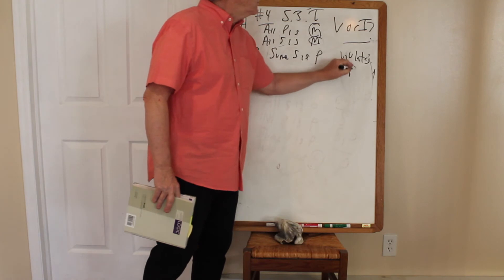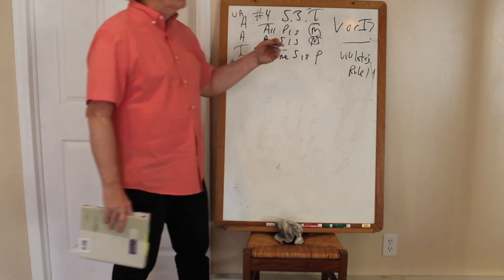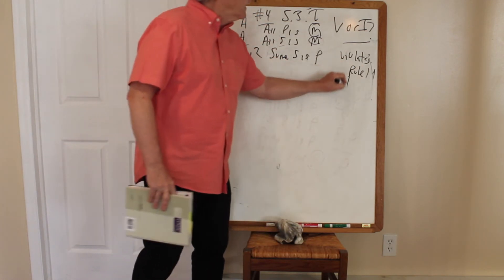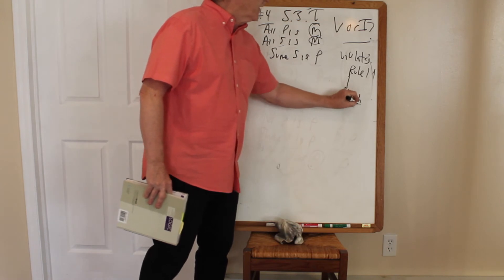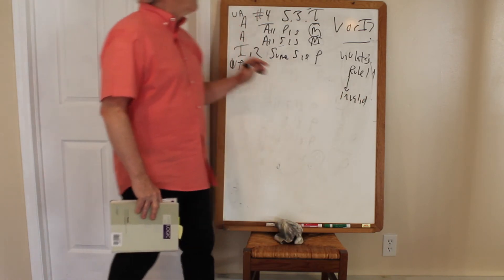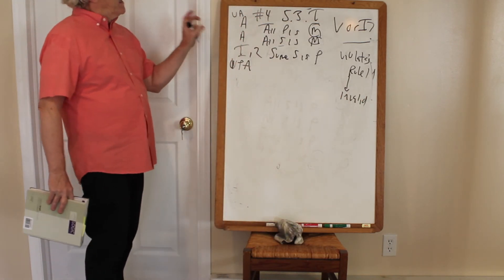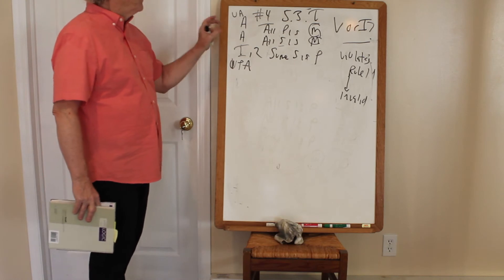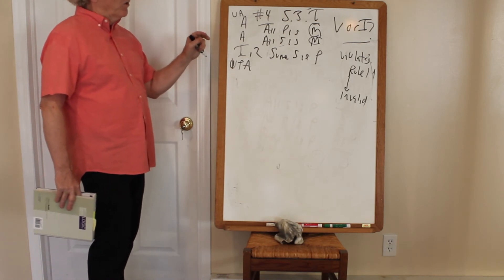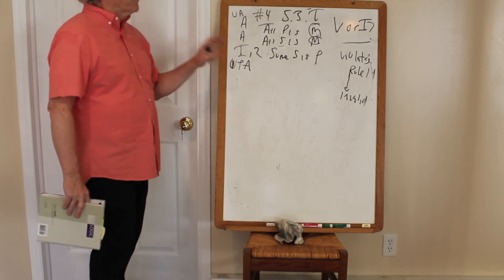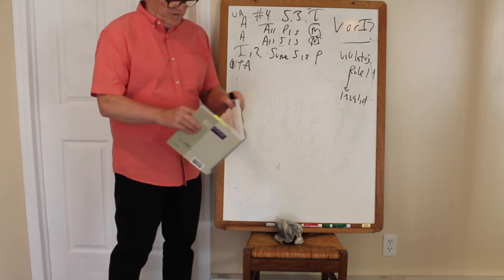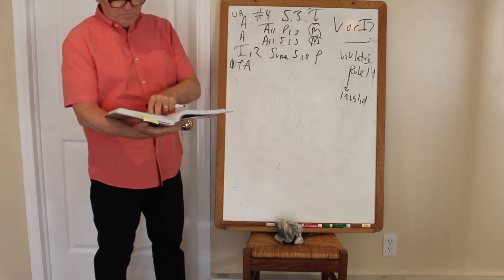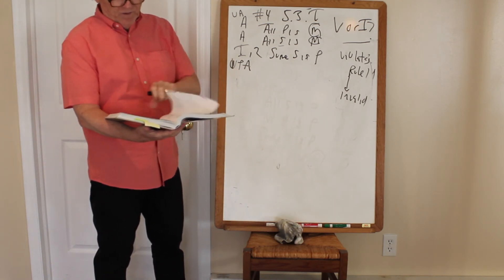If it violates one or more rules, the argument must be invalid. So AI figure two — that combination of mood and figure, that form — is always invalid.